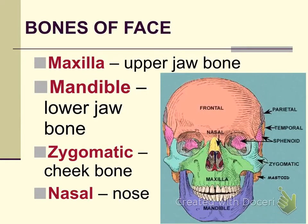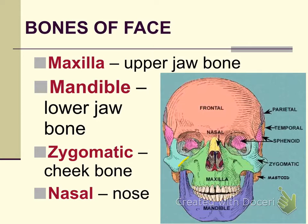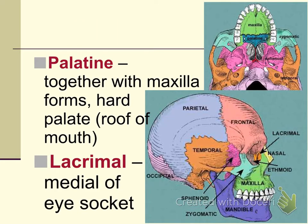The skull also includes the bones of the face. The maxilla, shown in green, is the upper jaw. The mandible in purple is the lower jaw. The zygomatic, which is the cheekbone, forms the anterior half of the cheekbone — the posterior half is basically the temporal bone. The nasal bone, shown in yellow, is the bridge of the nose. The palatine bone forms the posterior portion of the hard palate.